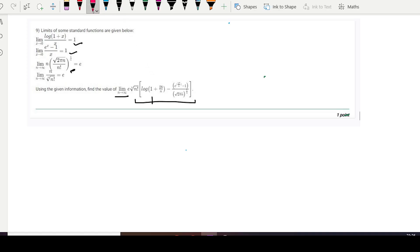It is given that limit n tends to infinity e n factorial raise 1 by n times log(1 plus 28 by n) minus e to raise 17 divided by n minus 1, divided by root over 2πn the whole power 1 by n.